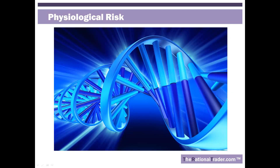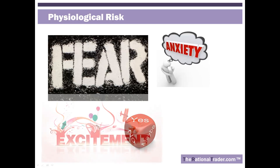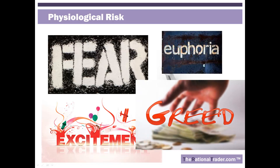More important is the physiological risk — the biological component. When you put money at risk, your body responds to that threat the same way it responds to every other threat. It initiates a physiological response causing fear, anxiety, and doubt, and on the flip side, excitement, greed, and euphoria when things go your way. This response impacts your ability to make sound decisions. The Rational Trader was designed to recognize this as the largest component of risk and to help you overcome it.